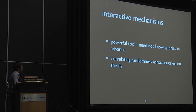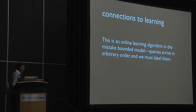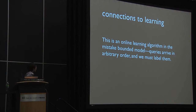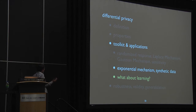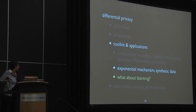This is actually an online learning algorithm in the mistake-bounded model. The queries arrive in arbitrary order and we must label them.